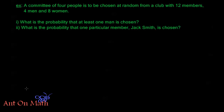A committee of four people is to be chosen at random from a club with twelve members — four men and eight women. For both problems, the order of our sample space is going to be all possible four-person committees from twelve members, so we know that there's twelve choose four of these. We don't need to use permutations here because we're not assigning president, secretary, etc. — we're just selecting a committee of four people.